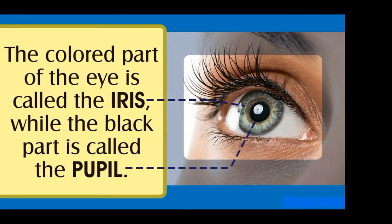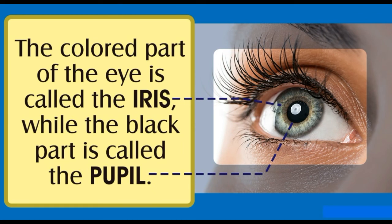Optic nerve — it is a bundle of nerve fibers that serves as a cable connecting the eye to the brain. This optic nerve helps in transmitting signals from the retina to the visual center of the brain. Yellow spot or macula — situated at the center of the retina, the yellow spot helps in absorbing excess light that enters the eye. The macula is responsible for our reading vision and helping us to see objects right in front of us. Eyelids — the eyelids help in the protection and lubrication of our eyes. They also help in controlling the amount of light falling into our eyes.